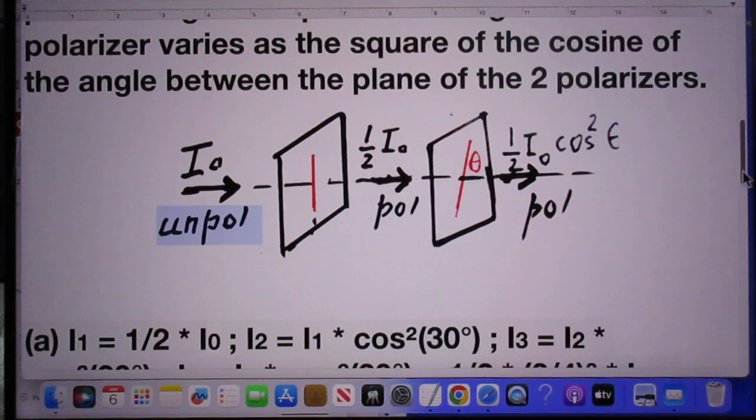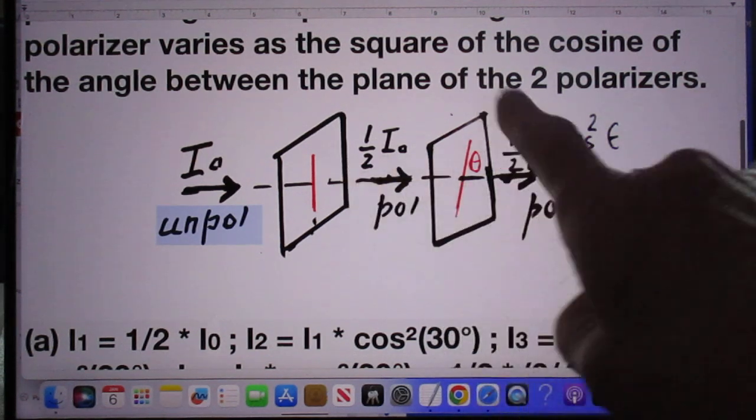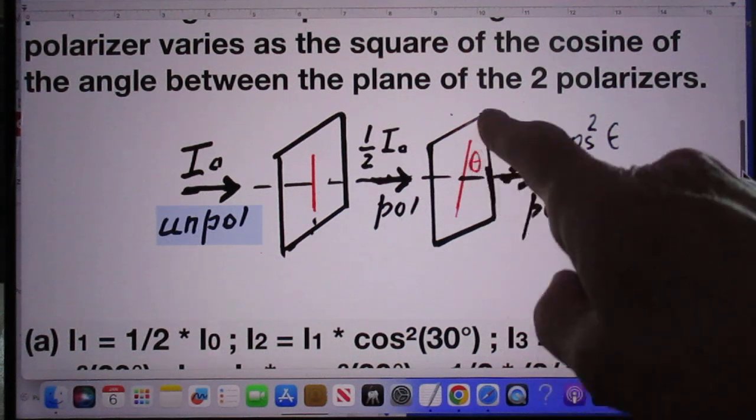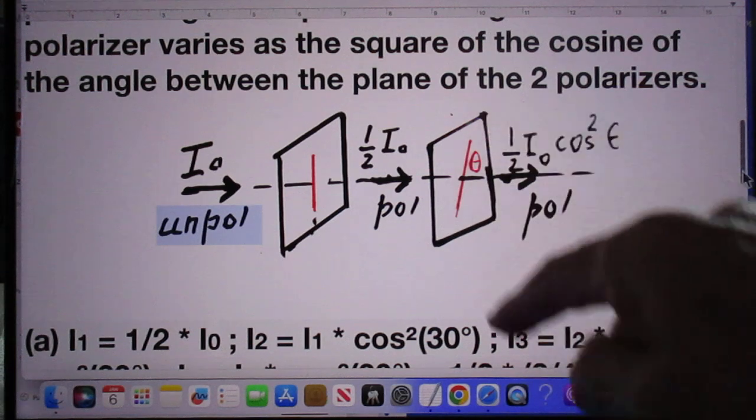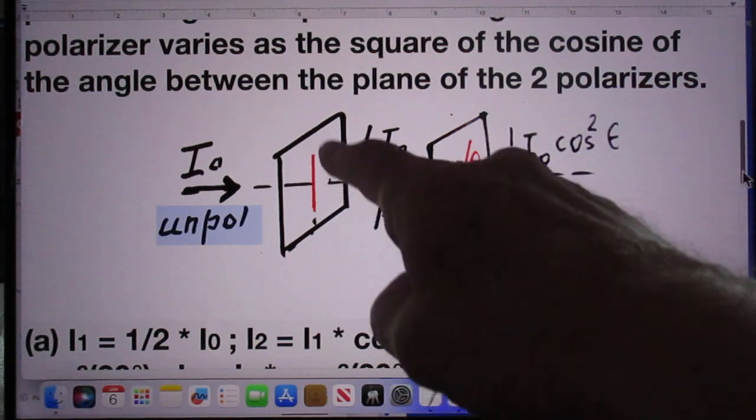In practice, the intensity will be somewhat less than half I₀, but we will now assume that it's still one-half I₀. Then it goes to a second polarizer. The angle of polarization is now theta compared to this one.